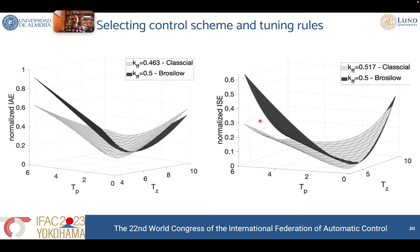Comparing the two metrics, to reach a better result for the integral square error we need a larger ratio, which also means stronger control effort. However, in the case of the integral absolute error, we need a smaller ratio between the pole and the zero. Also, if we compare the two schemes, that ratio is smaller in the case of the Brusiilov scheme than in the case of the classical control scheme. So this is also a result to keep in mind when selecting the control scheme, because a smaller ratio means less control effort coming from the feedforward compensator.